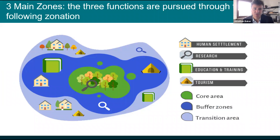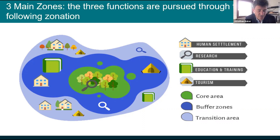How do biosphere reserves function? They're made up of three zones and three functions that are pursued through the zonation you see on the screen. There's a core area, buffer zones, and a transition area. The core area is the protected area — strictly protected zones that contribute to the conservation of landscapes, ecosystems, species, and genetic variation.